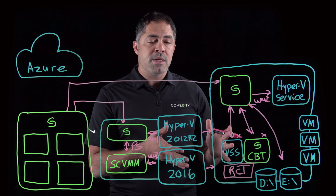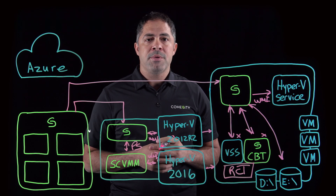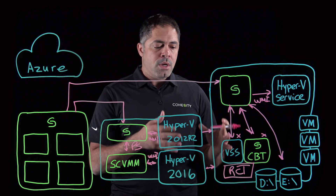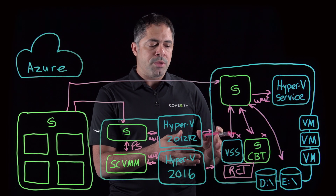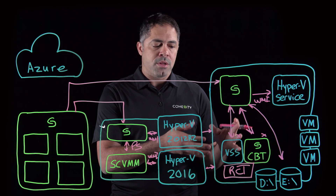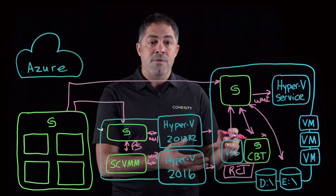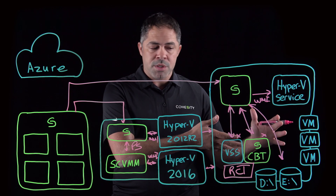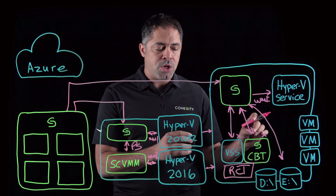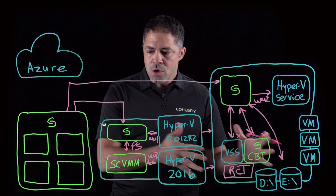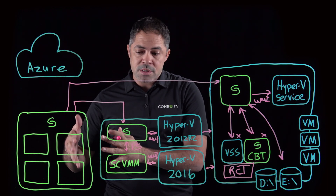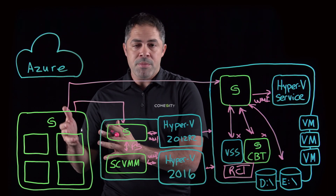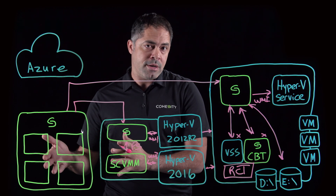Once changes have been identified — just as in Hyper-V 2012 R2 — we transfer the data and those changed files from the primary storage system through the Cohesity secure layer onto our platform, where the drives or files will be maintained fully hydrated.